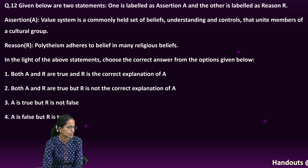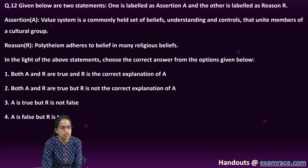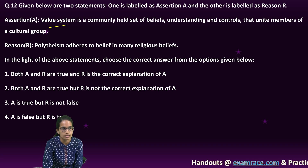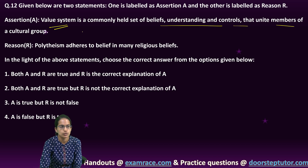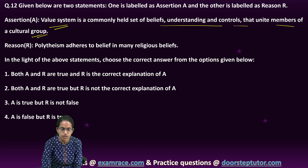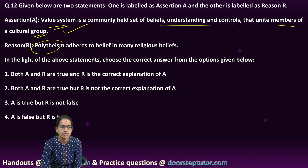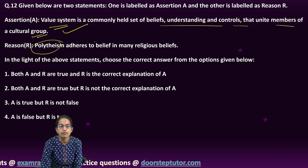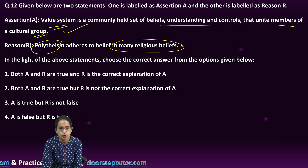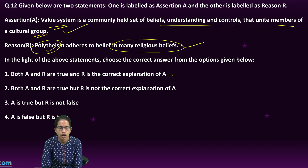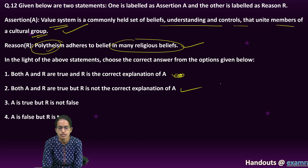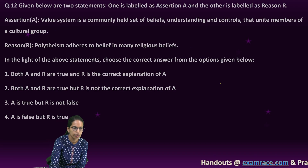The next is an assertion-reason question. The first statement asks: what is a value system? It is a set of beliefs, understanding and control that unites the members of a cultural group — that's true. Polytheism means believing in many religions at a time. So both statements are true, but one is on religion and the other is on value system. Therefore, A and R are both correct, but R is not the correct explanation for A.